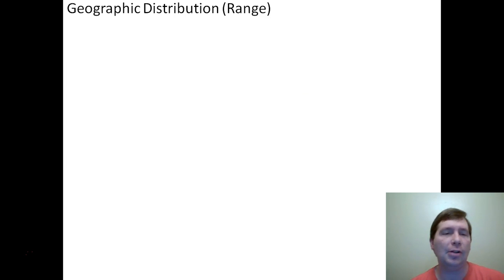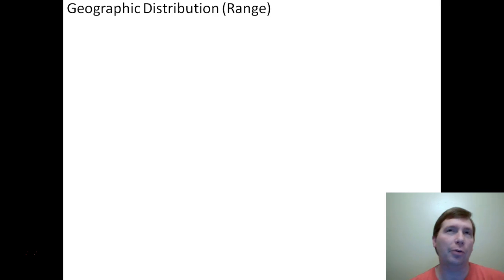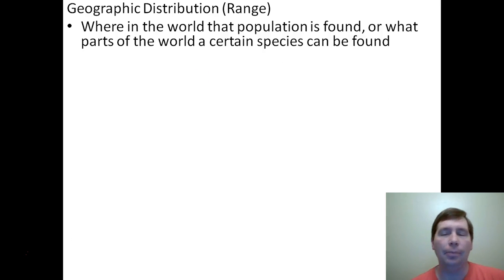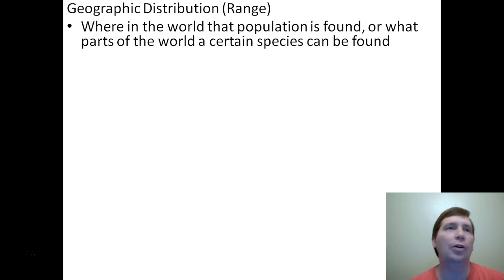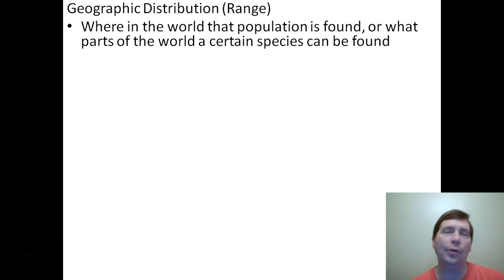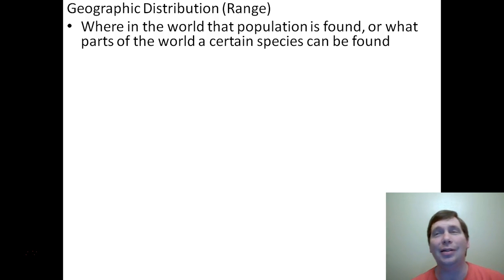The first major characteristic is geographic distribution, also called range. Simple idea: where in the world do you find this species? Where in the world do you find penguins? Not in the desert. Where do you find camels? Not in Greenland, because the range of that species doesn't extend to those areas. The range of a species is where it can live — what's its habitat, what's its home.